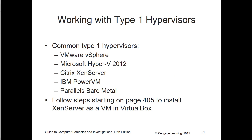Common Type 1 hypervisors include VMware's ESXi — vSphere is the management portion — Microsoft's Hyper-V, Citrix's XenServer, and Apple's Parallels. Some of these have walkthroughs in our book.